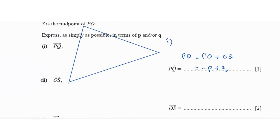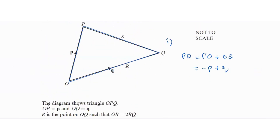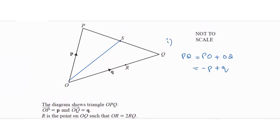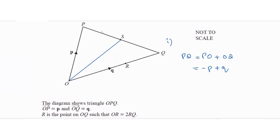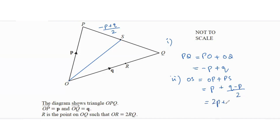Now find OS. S is the midpoint of PQ, so OS = OP + PS = p + (q - p)/2 = (2p + q - p)/2 = (p + q)/2. Alternatively, PS is half of PQ = (-p + q)/2, giving OS = p + (-p + q)/2.